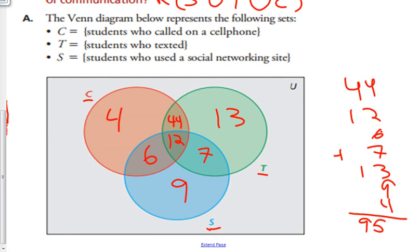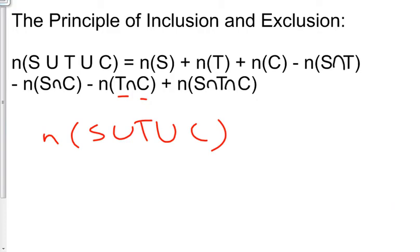There's another way to do this other than filling in a Venn diagram. It's to use the principle of inclusion and exclusion.